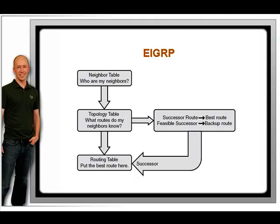After the router knows of its neighbors, it begins exchanging routes with its neighbors. These routes go into the topology table, which is similar to a routing table, but no decision has been made yet as to the best route. Instead, the topology table is used to build a map of the network with different speed limits and different roads or links.